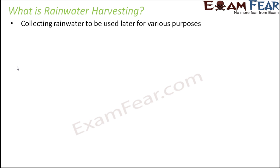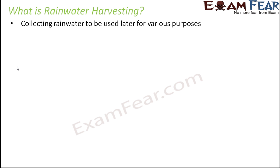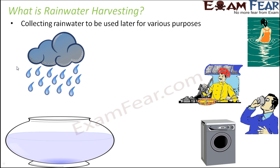So instead of doing that, how would it be if we directly store that rainwater? We directly store it in our houses, then we filter it, clean it, and use the same water directly for so many purposes. In that case, we do not need to go through all this indirect process to get the same water back from rivers. It's a very simple thing.